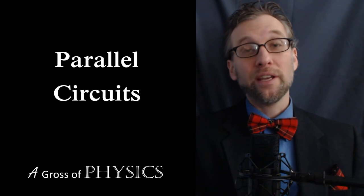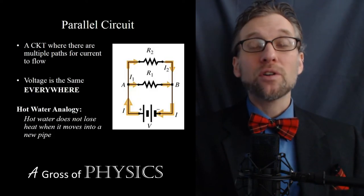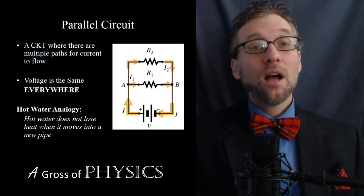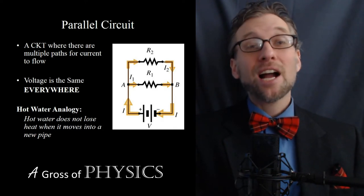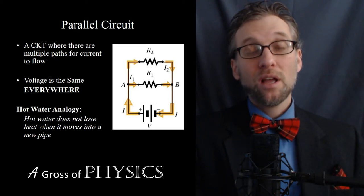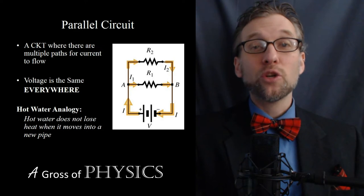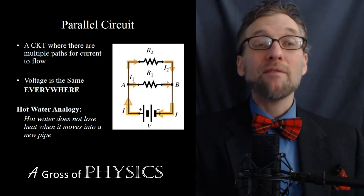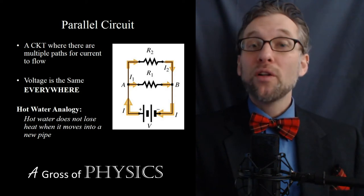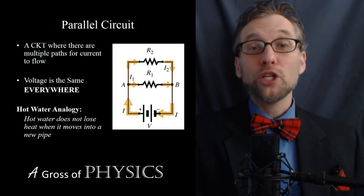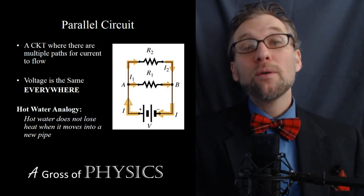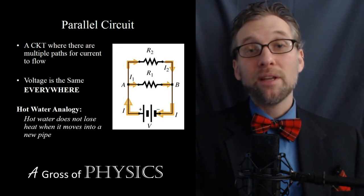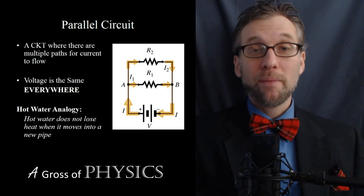Parallel circuits work a little differently. The circuits in your house are connected in parallel, because if you have one light bulb blow out, it's not going to turn off the rest of the power in your house. There are different paths for the electrons to flow. When electrons have a choice, we call that spot a junction. When there's a junction, you immediately have a parallel circuit. Two resistors that share a common set of junctions are considered to be in parallel.